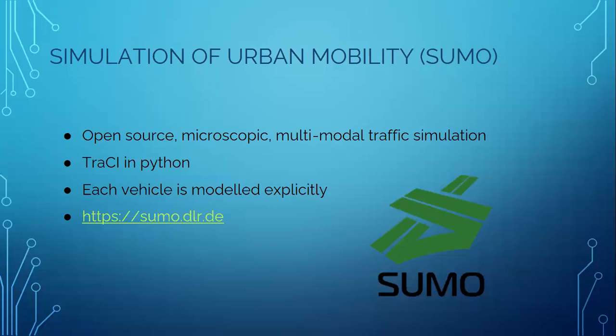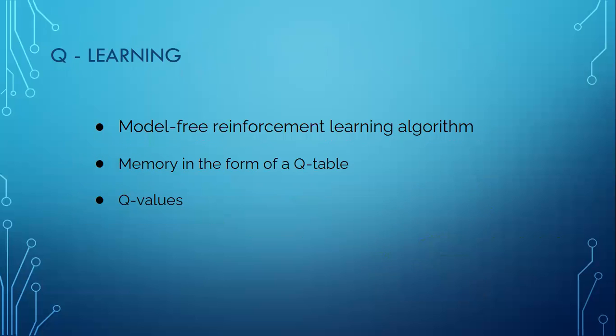Simulations are deterministic by default, but there are various options for introducing randomness. Now we will talk a little about Q-learning. Q-learning is a model-free reinforcement learning algorithm. The goal of Q-learning is to learn a policy which tells an agent what action to take under what circumstances. It doesn't require a model, hence the connotation model-free of the environment, and it can handle problems with stochastic transitions and rewards without requiring adaptations.